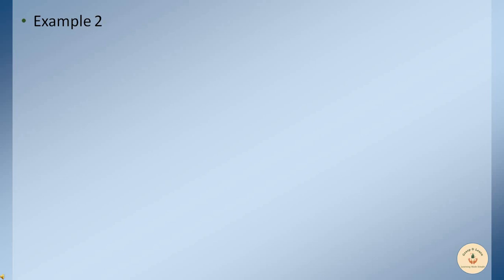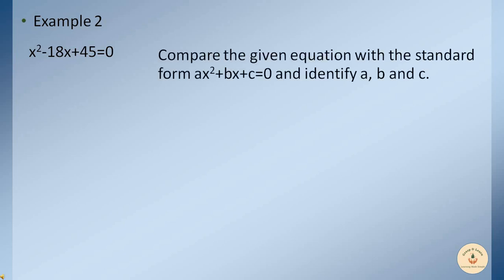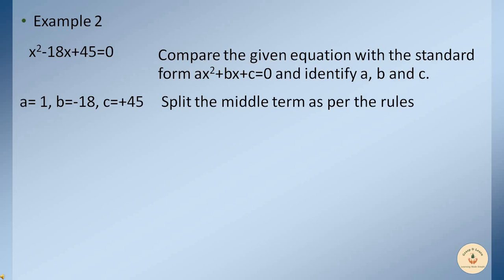Let's look at one more example. Our second example is x² − 18x + 45 = 0. Since the right-hand side is already 0, we need not transpose any terms. Comparing with the standard form ax² + bx + c = 0, we get a = 1, b = −18, and c = +45. To split the middle term, we note b = −18 and a×c = +45.